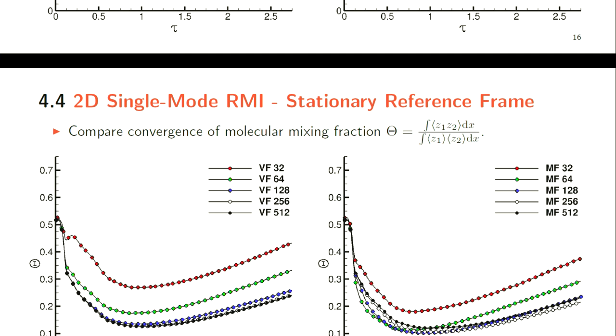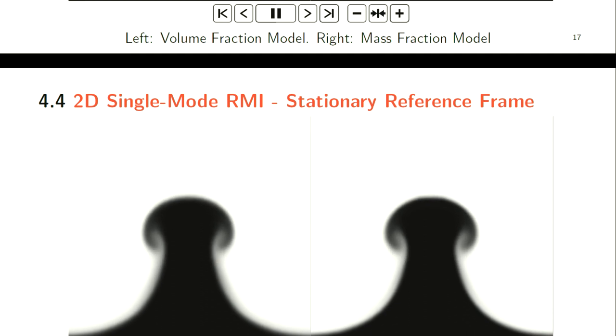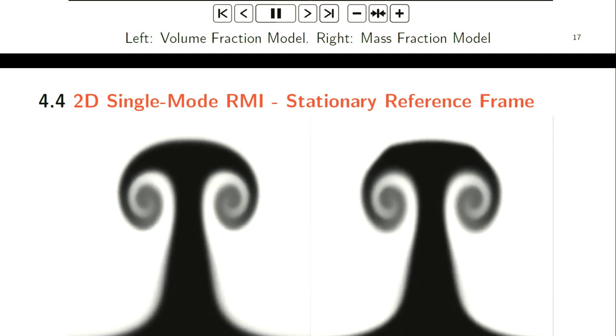We're particularly interested in how the molecular mixing fraction, which is given there based on plane averages of volume fractions, converges. For the volume fraction model, the results on the left, the convergence is nice and uniform. We actually get these curves to collapse by about 256 points across the initial wavelength. This is in the stationary reference frame. Whereas for the mass fraction model, we see that the convergence is not uniform at all and doesn't even converge by the largest number of grid points that we considered. Here's an animation at a slightly coarser number to really accentuate the differences between the two approaches.